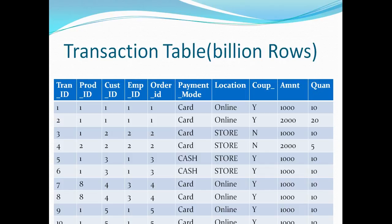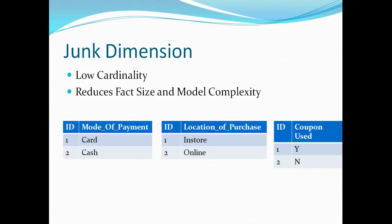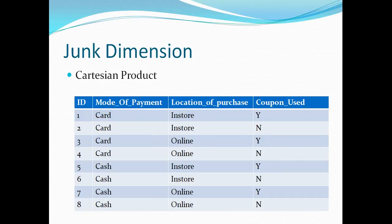The best way to handle this is what we call junk dimensions. They are low cardinality dimensions, and this approach is going to reduce your fact size and reduce your model complexity. I can create a single table from these three columns by taking a Cartesian product and assigning a single row to each combination. For example, card, in-store, and coupon used will be ID 1; card, in-store, and no coupon will be ID 2, and so on. When we take the Cartesian product, we get eight rows.